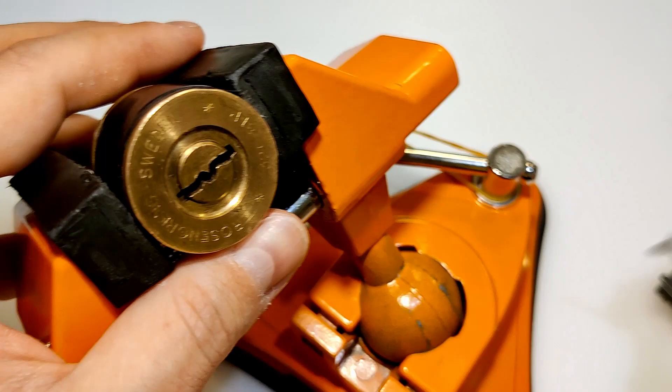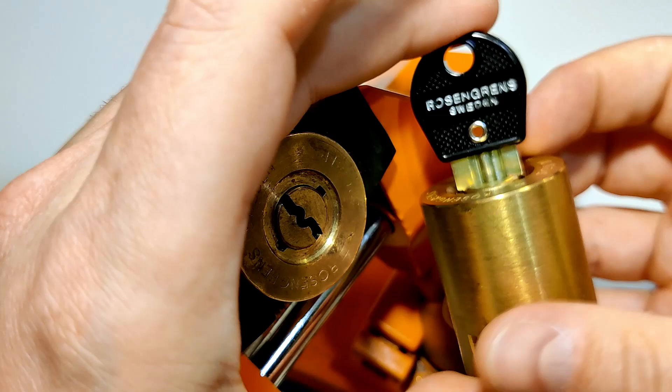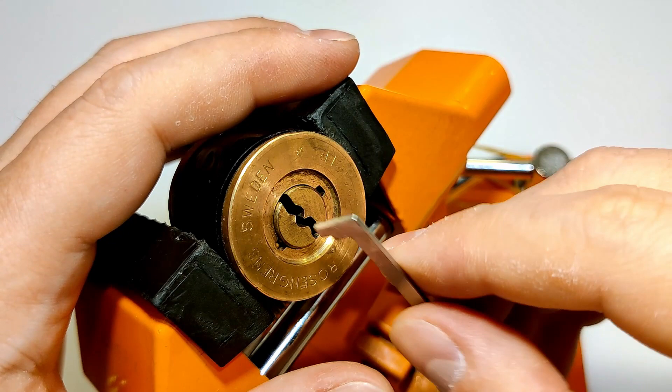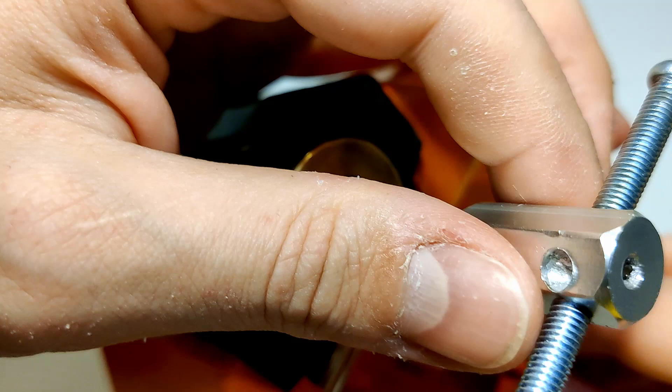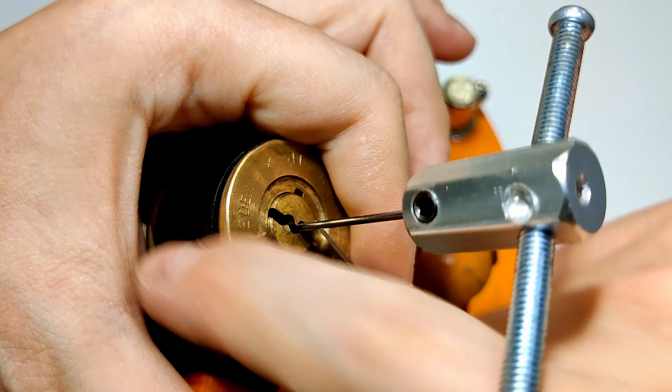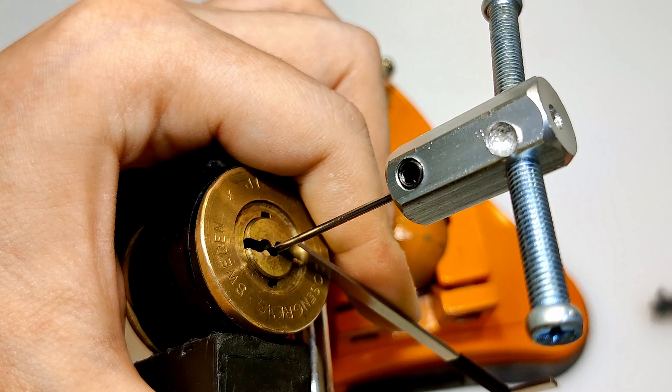To be honest, I have the newer version and it's very similar. But the difference, the key is the same and the bidding is the same, but differences on the disks. Disks are with a lot more false gates. And I think I was lucky for this one to even pick it because I was trying. I know that I have the new one and I got the old one. But when I tried to pick it, that's why I made it a cutaway lock, so I can try to figure it out if it's even possible to pick this one.